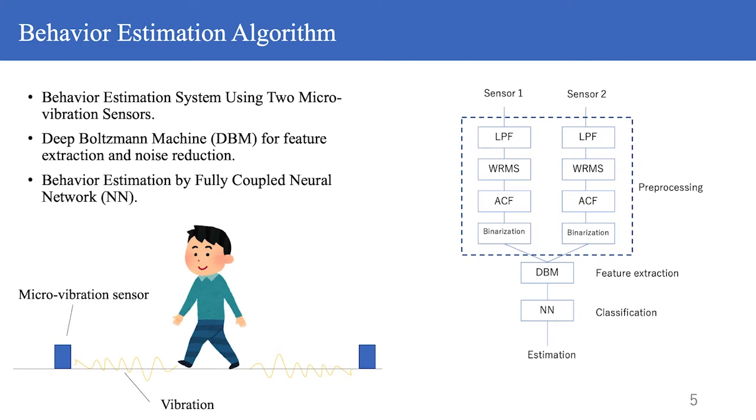Next, let us talk about our proposed behavior estimation system. The flowchart on the right shows the outline of our proposed behavior estimation system. The first step is to install two micro-vibration sensors. These sensors will be installed on the floor. The data measured by these sensors is fully processed. Then we extract features using a Deep Boltzmann machine and estimate the behavior using a fully-connected neural network.